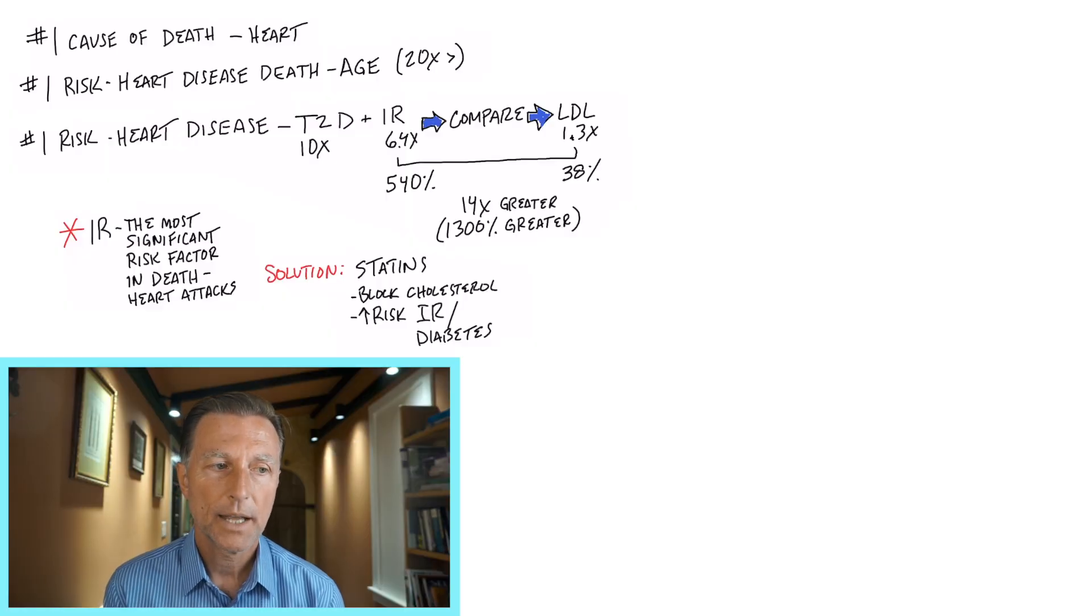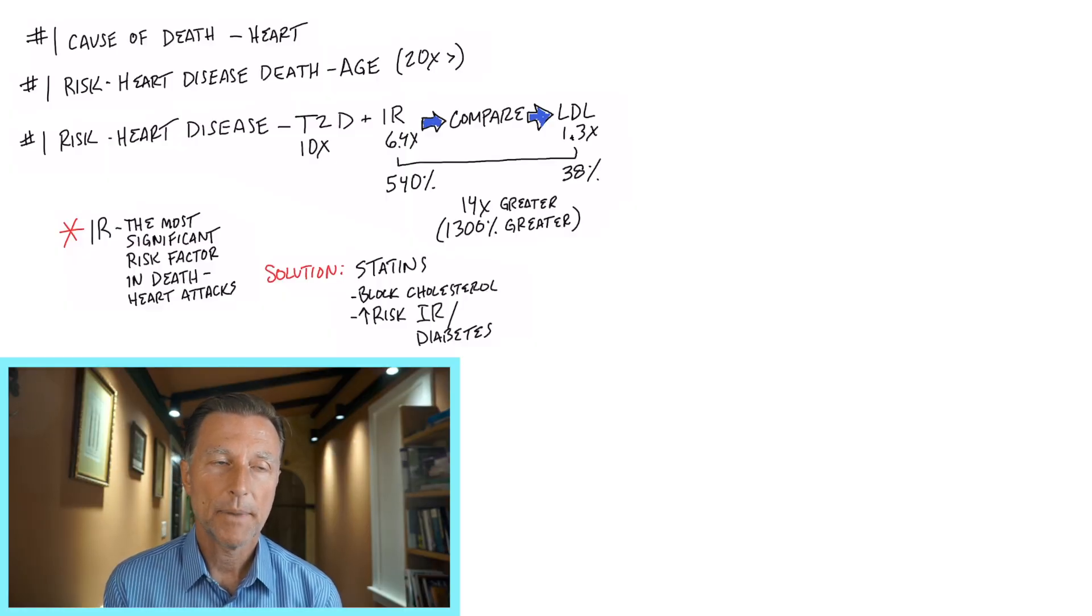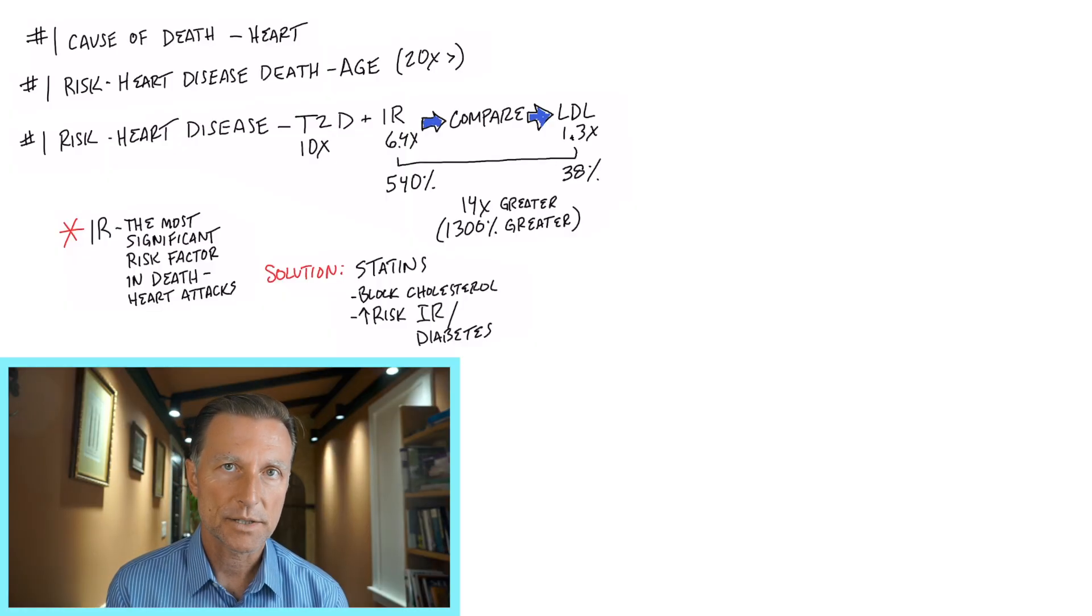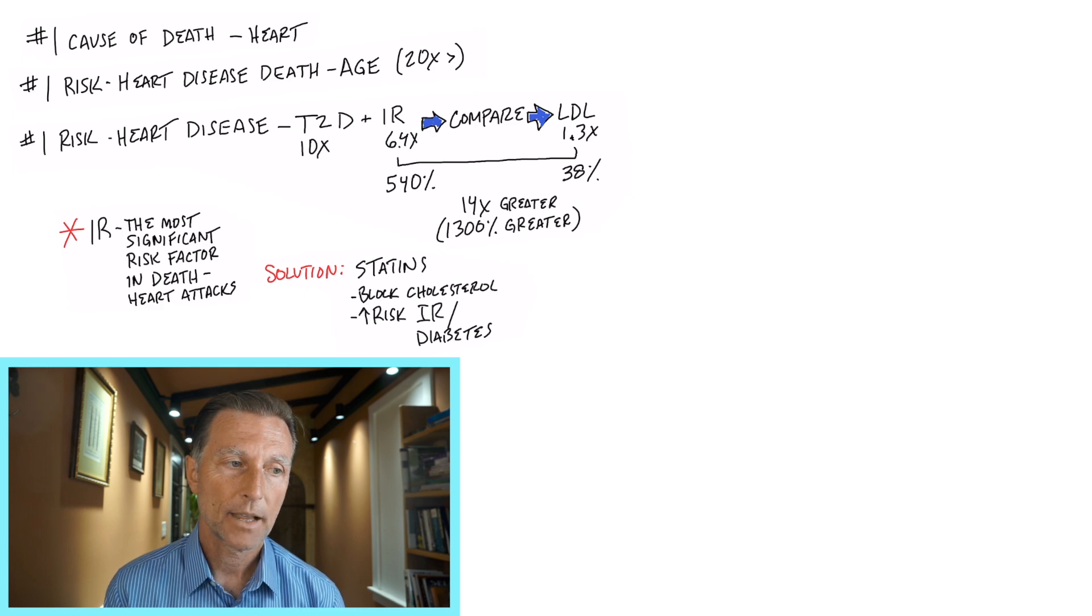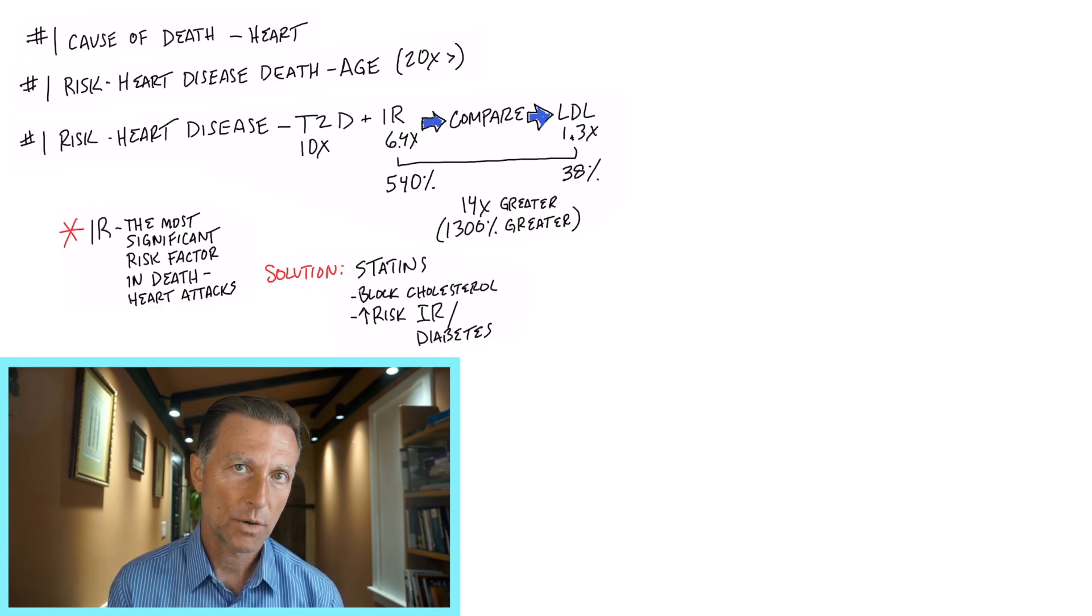When we talk about longevity, we want to keep the mitochondria as strong as possible. We don't want the mitochondria to die. One of the reasons the mitochondria dies and even can shorten your life is a term called apoptosis.